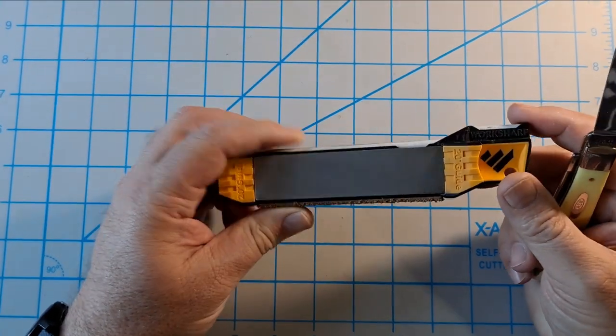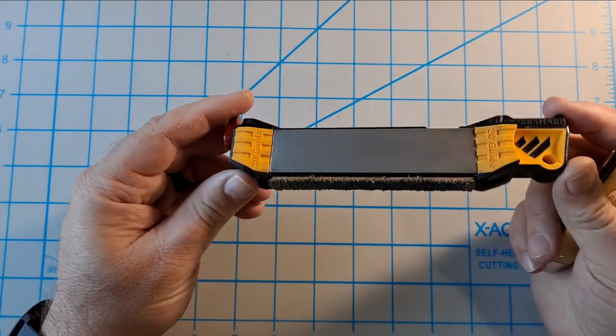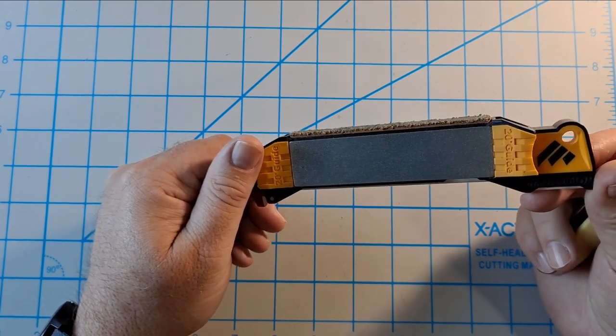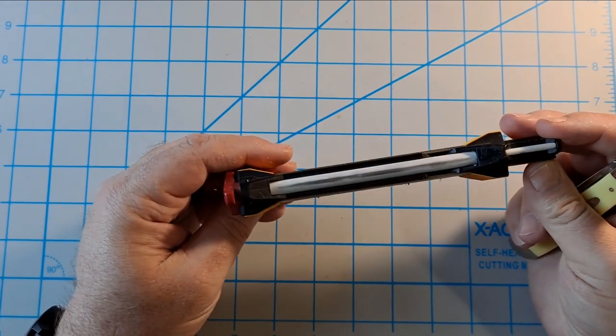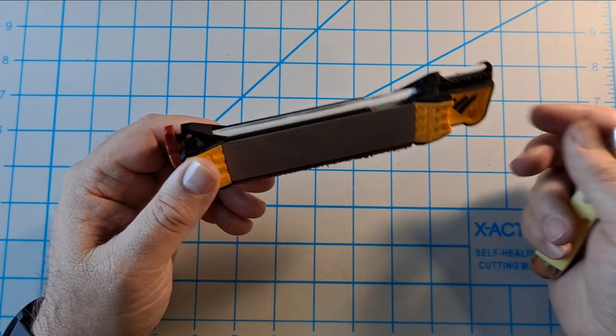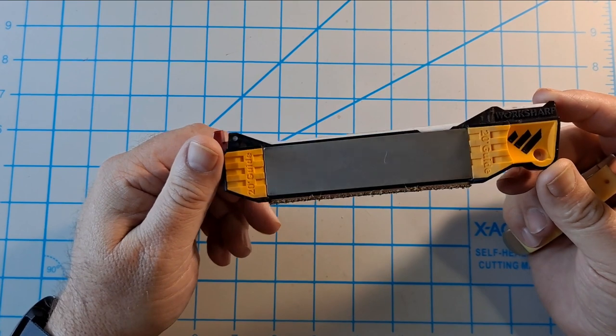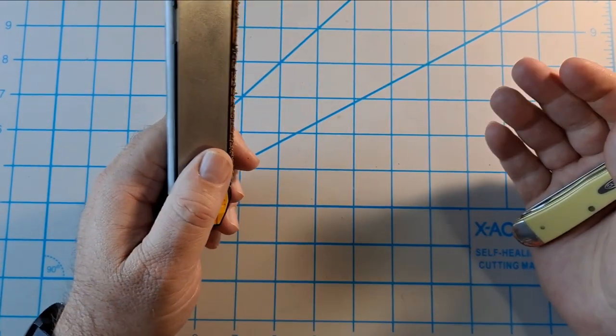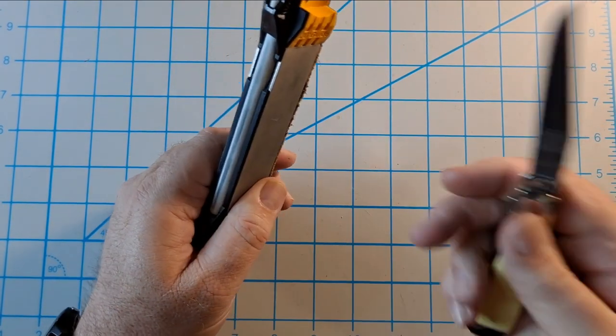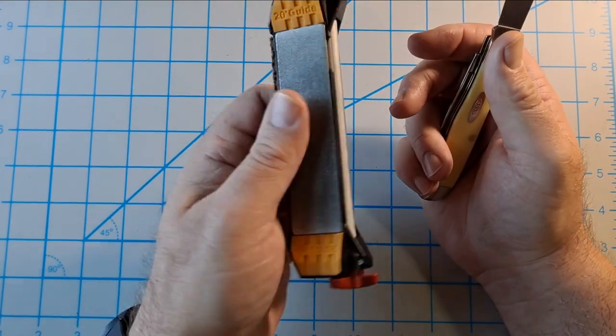And, I don't have a strop like she does. So, I'm just going to use the WorkSharp guided field sharpener. I, probably 90% of the knives I sharpen, I actually just, I use this. I get a pretty good edge on everything.